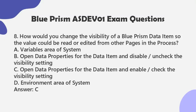Question 8: How would you change the visibility of a Blue Prism data item so the value could be read or edited from other pages in the process? a. Variables area of system. b. Open data properties for the data item and disable/uncheck the visibility setting. c. Open data properties for the data item and enable/check the visibility setting. d. Environment area of system. Answer: C.